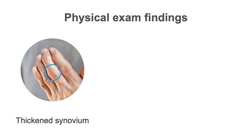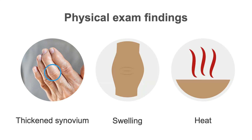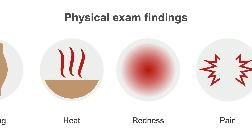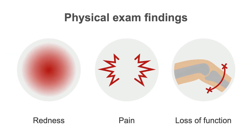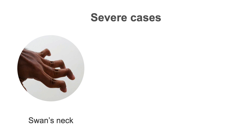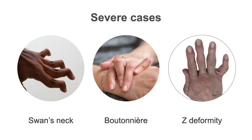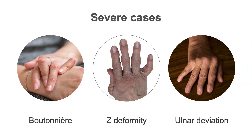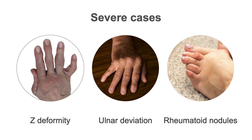On physical examination, you may be able to appreciate thickening of the synovium and the cardinal features of inflammation: swelling, heat, redness, pain, and loss of function. If the arthritis is severe or has been present for years, you will also notice deformities like the previously mentioned swan's neck, boutonniere, and Z deformities, and ulnar deviations.